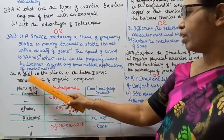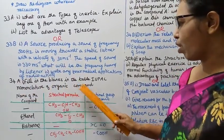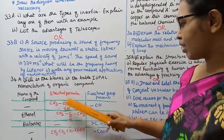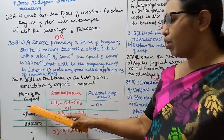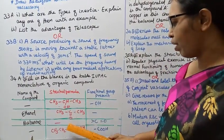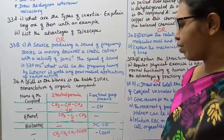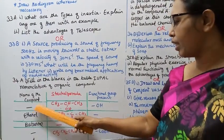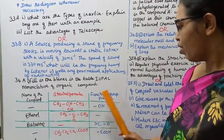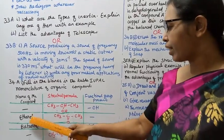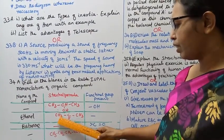Question 34A, first subdivision: Fill in the blanks in the table — IUPAC nomenclature of organic compounds. The table includes: name of the compound, structural formula, and functional group present. Fill in the missing entries for each row.